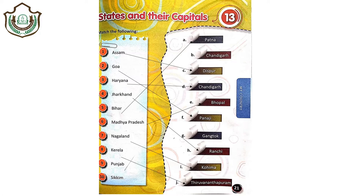The ninth one is Punjab, where Makki di Roti and Sarson da Saag is very famous, and its capital is again Chandigarh. Then the tenth one is Sikkim and its capital is Gangtok. Students, I hope you have learned all these states and capitals. One more thing: Haryana and Punjab have the same capital, that is Chandigarh. So don't get confused — the capital of both Haryana and Punjab is Chandigarh.